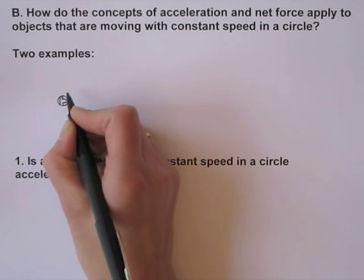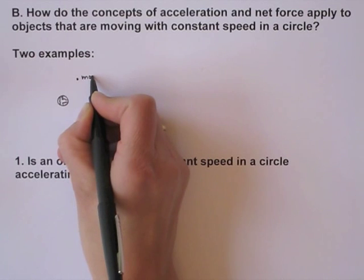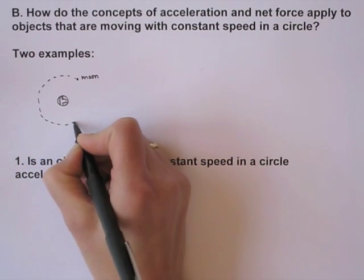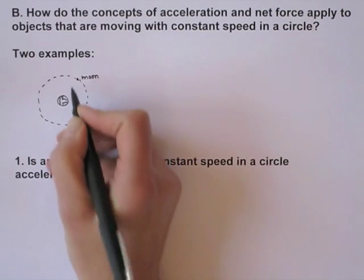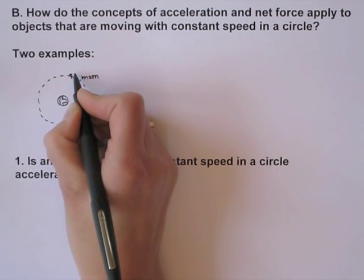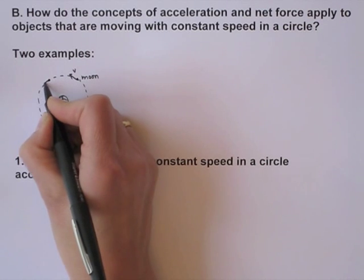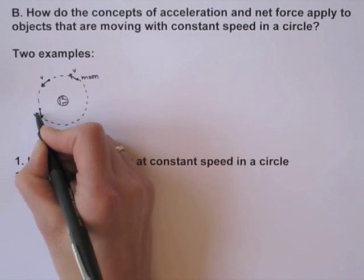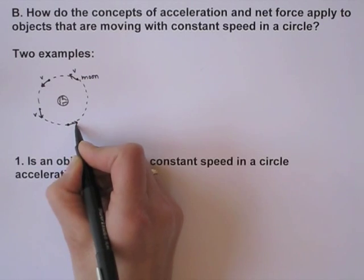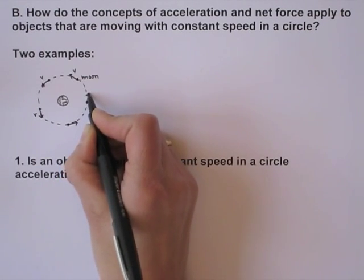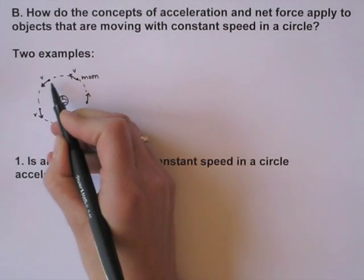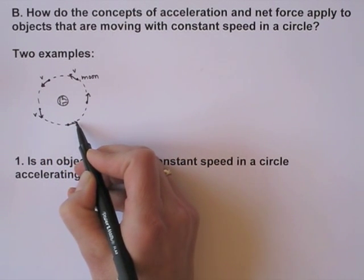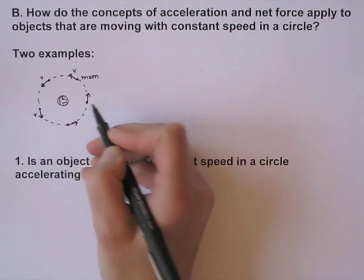Here's the Earth and here's the Moon. We have the Moon revolving around the Earth in approximately a circle, and it's going to have approximately a constant speed. Let's draw some velocity vectors showing its velocity at some different times. You'll notice that I tried to make the length approximately the same — that shows that the speed is constant — but the direction is changing.